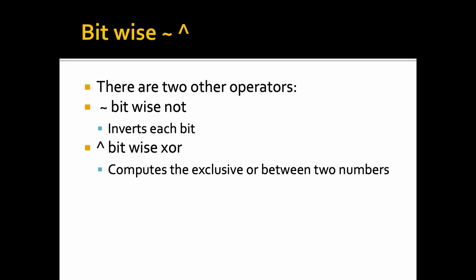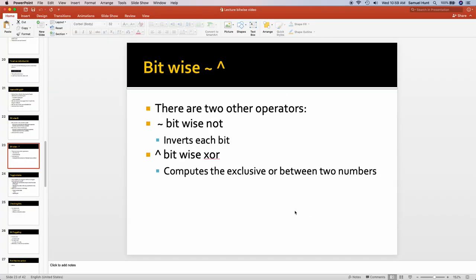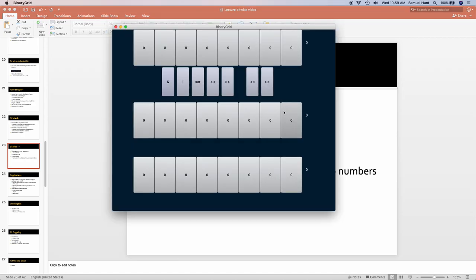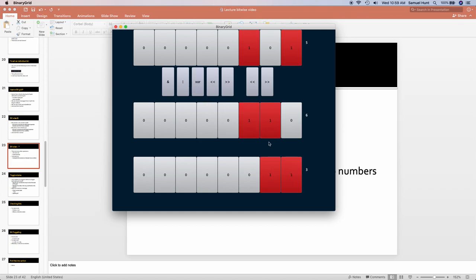There are two other bitwise operators. Bitwise NOT is quite self-explanatory — it inverts each bit in a single number: 1 becomes 0 and 0 becomes 1. Bitwise XOR works with two variables and computes the exclusive OR. In the binary grid: if both values are 0, the output is 0; if one value is 1, the output is 1; but if both values are 1, the output is 0.